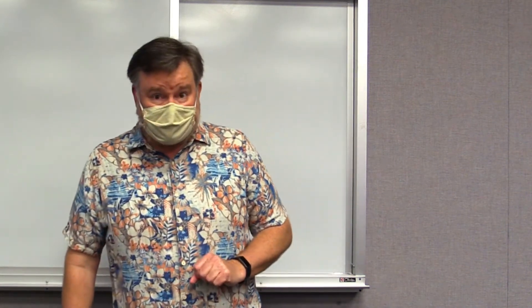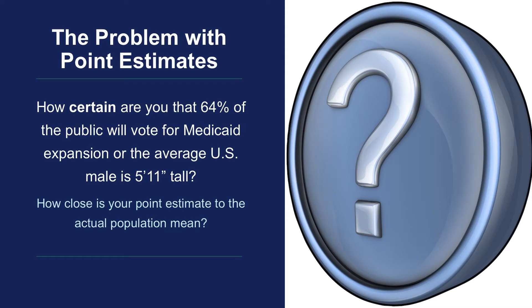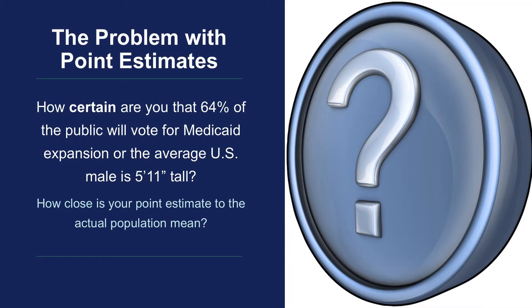But there is a problem with these point estimates, and that is the question of certainty. How certain are you that 64% of the public will vote for Medicaid expansion? Or how confident are you that the average college-age male is 5 foot 11 inches tall? How close is your point estimate to the actual population mean?